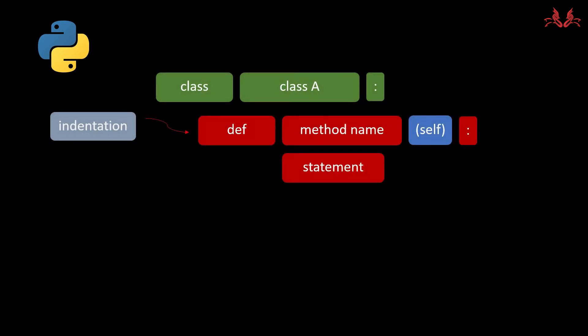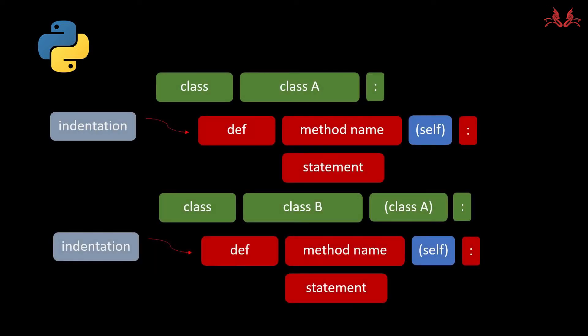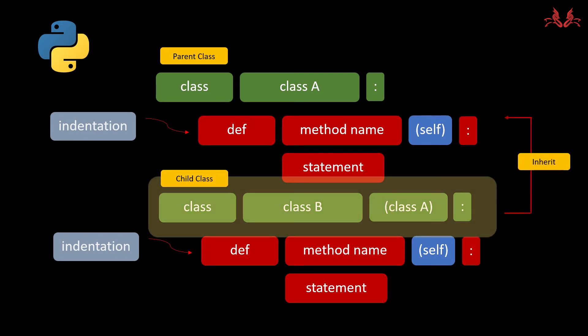Welcome to Lativa's Python tutorial. In the last video we talked about objects and attributes of a class, and today we are going to talk about inheritance. We set a class A with its functions, then set a class B with class A as its attribute — class A becomes the parent class and class B becomes the child class, and class B will inherit the functions of class A. It is very simple, so let's demonstrate it.